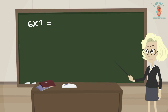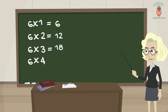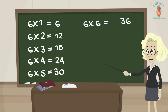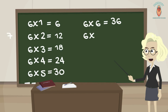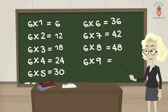6 1s are 6, 6 2s are 12, 6 3s are 18, 6 4s are 24, 6 5s are 30, 6 6s are 36, 6 7s are 42, 6 8s are 48, 6 9s are 54.